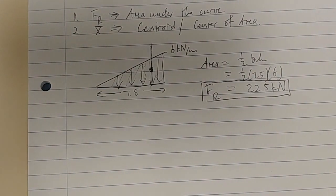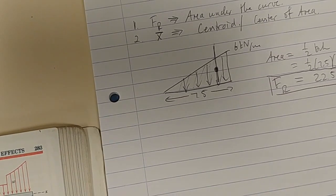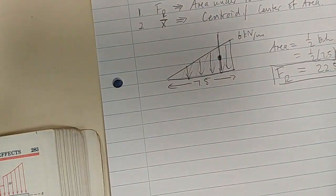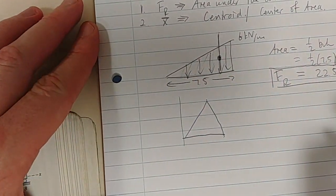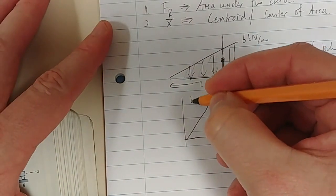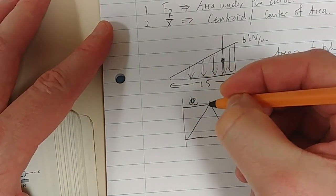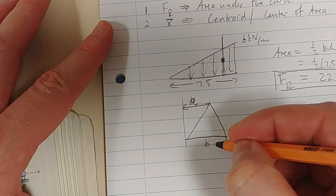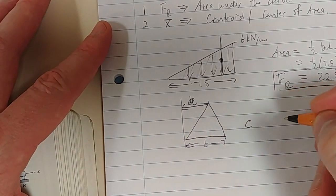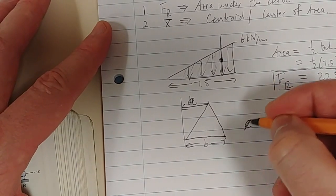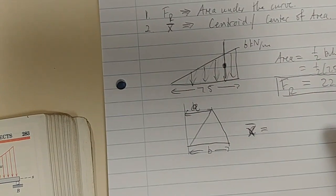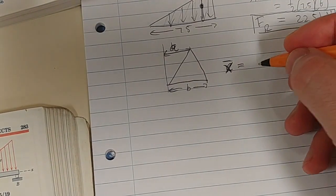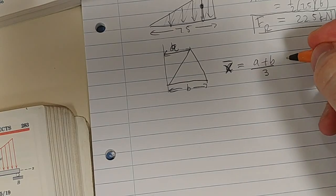I find this to be a better description than the one given by the textbook we're using. So what does it look like? This is B, that was A. That length is A, that length is B, and the centroid, rather the x coordinate of the centroid, is A plus B over 3.